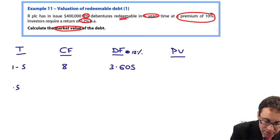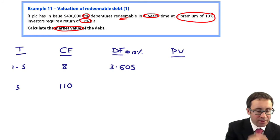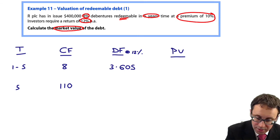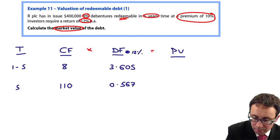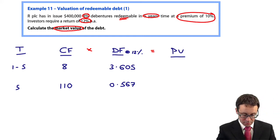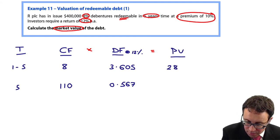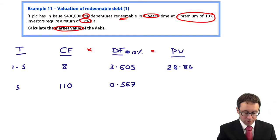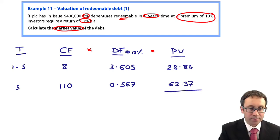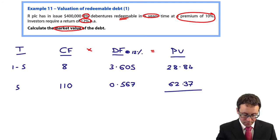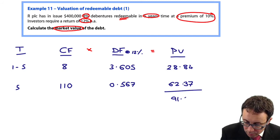You need an annuity factor for 5 years. I'll use my calculator. The discount factor is 3.605. We then need to look at T5. At T5, we have a redemption premium of 10%, so that's 110. The discount factor at T5 is 0.567. Multiplying across, taking your cash flow multiplied by your discount factor, does that give me 28.84? And then 62.37?